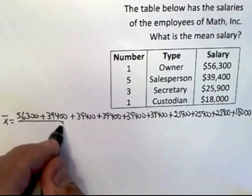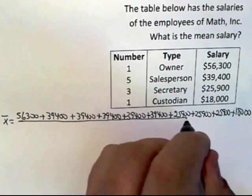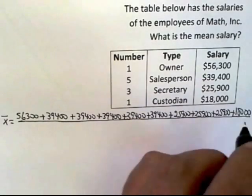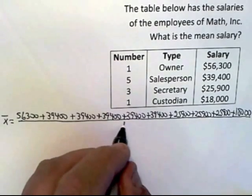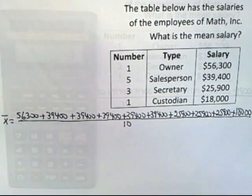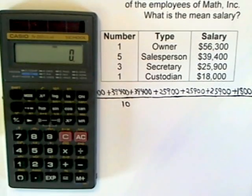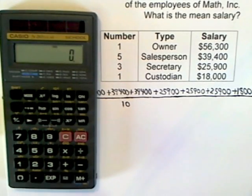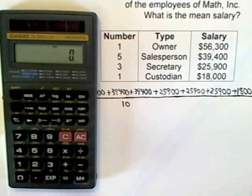And then you would divide by the number of numbers, which we've already said is ten. I wouldn't recommend doing it that way, but I will show you that setup. Instead, I want to do this using the stats mode on the Casio FX260.